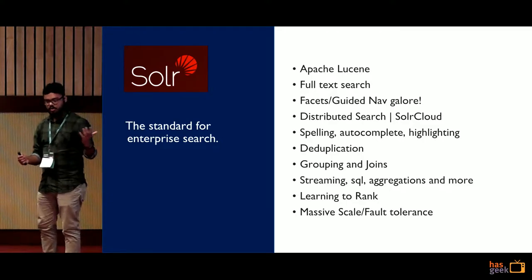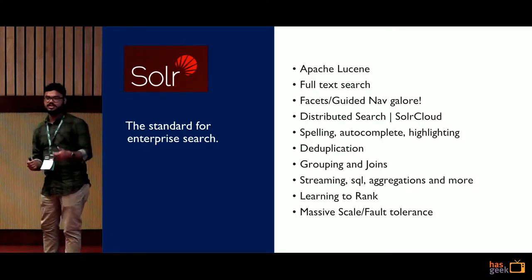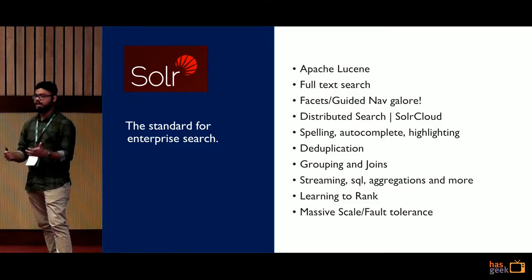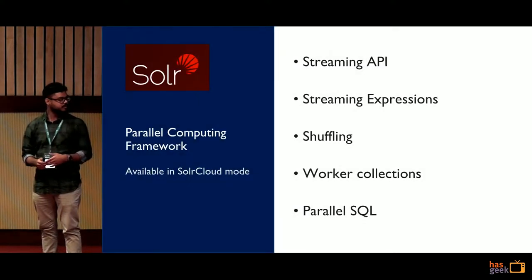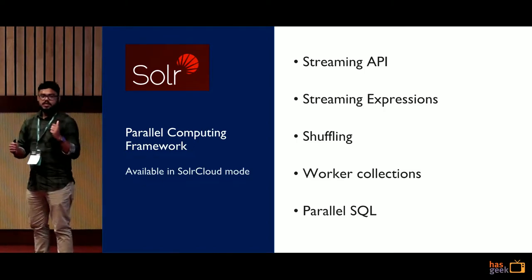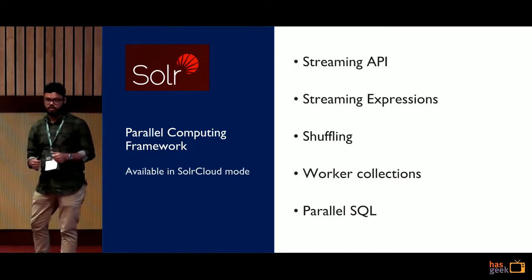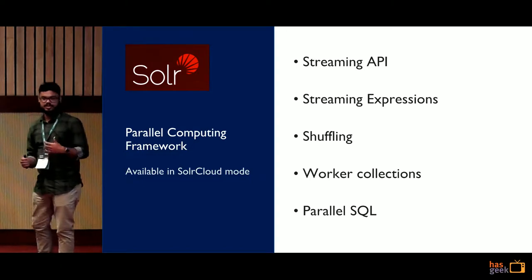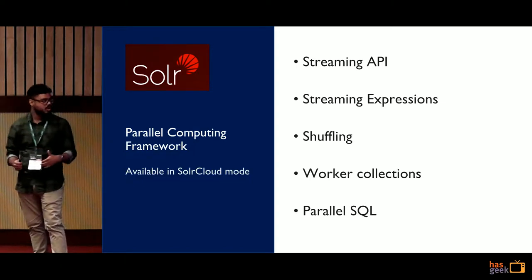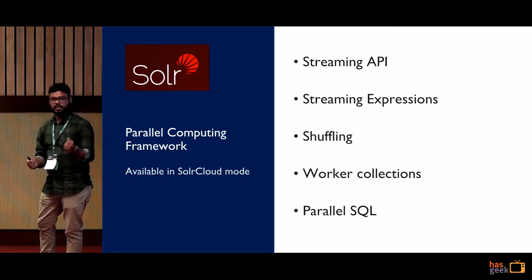In this talk we will discuss streaming and aggregations, and Solr has advanced features like learning to rank, which leverages machine learning algorithms to improve search experience. The parallel computing framework of Apache Solr is only available in SolrCloud mode. We will discuss streaming API expression, shuffling, and worker collections. Parallel SQL is a wrapper on top of streaming expressions — whatever SQL query you provide to Solr gets converted into a streaming expression internally and executed implicitly.